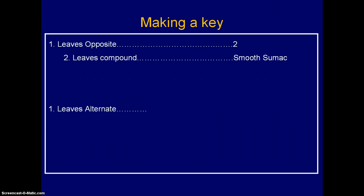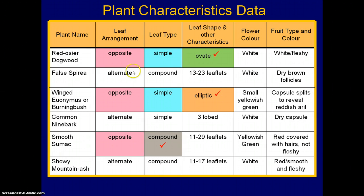So in terms of leaves compound, we've gone to number 2, and we have to have two choices of number 2. The first was leaves compound — we knew that was smooth sumac. The other possible choice was that leaves were simple, and we knew that we had more than one choice, so we have to go to another number on the right-hand side. In this case, we'll put in number 3, and that will lead us to the two choices of opposite simple, distinguished through leaf shape.